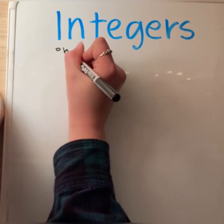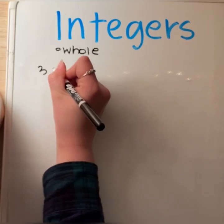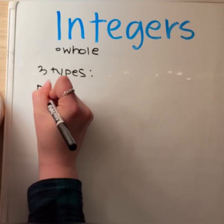All right, so today we're going to be talking about integers. Integers can be classified as whole numbers having positive and negative values. We have three types of integers.